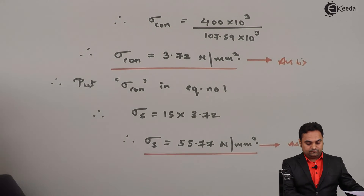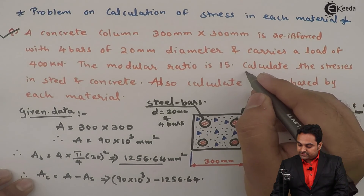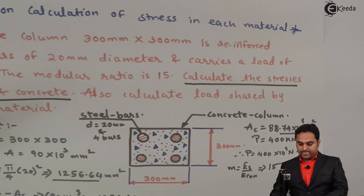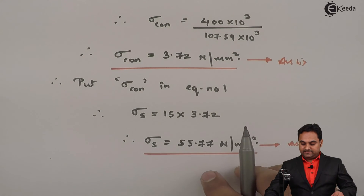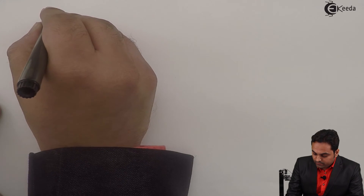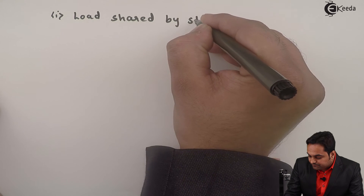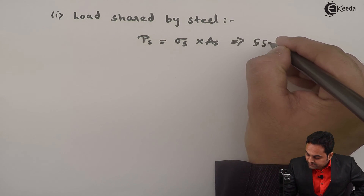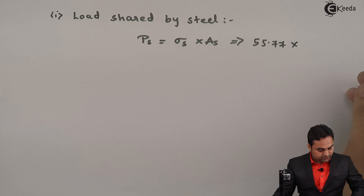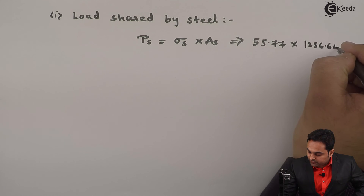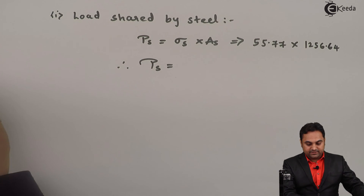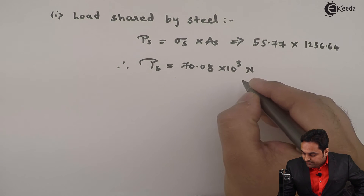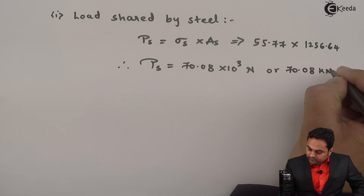Now checking the question — we had to calculate stresses in steel and concrete, which we have found. Next, we also calculate the load shed by each material. Load shed by steel P_s = σ_s × A_s = 55.77 × 1256.64 = 70.08 × 10³ N, or 70.08 kilonewton. This is the third answer.